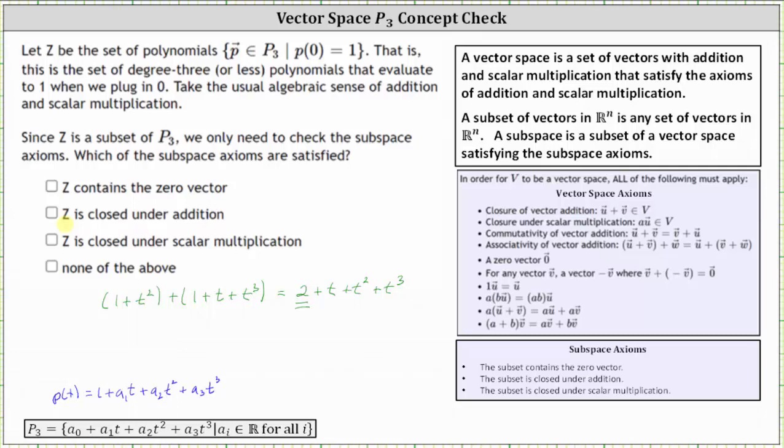Third, Z is closed under scalar multiplication where the scalar can be any real number. So let's consider, let's say, 3 times a polynomial in the subset Z. For example, 1 plus, let's just say, 2t² plus 3t³, where the polynomial is in subset Z because it's a degree 3 polynomial and the constant is 1. But notice how the product is 3 plus 6t² plus 9t³. And once again, because the constant is 3, not 1, the product is not in the subset Z. And therefore, Z is not closed under scalar multiplication, which means we checked the last box.